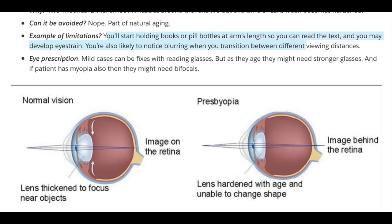Examples of limitations: you start holding books or pill bottles at arm's length so you can read the text, and you may develop eyestrain. You're also likely to notice blurring when you transition between different viewing distances. For the eye prescription: in mild cases, this can be fixed with normal reading glasses, but as patients age, they might need stronger and stronger glasses. If the patient also has myopia (nearsightedness), they might need bifocals that handle both nearsightedness and farsightedness.